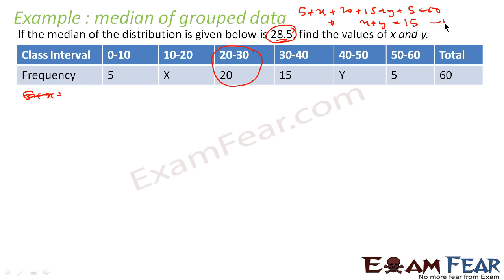So two things I can directly say: the first is that the median class is identified, and x plus y is equal to 15. I have to find the individual values of x and y, which means I need one more equation in terms of x and y. The median is 28.5, and to apply the median formula we need to find the cumulative frequency.